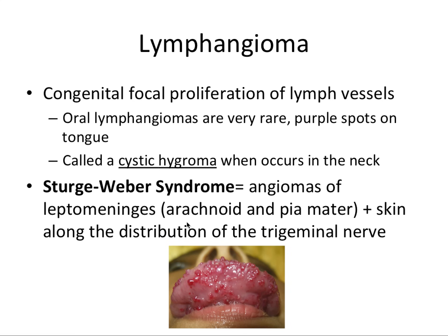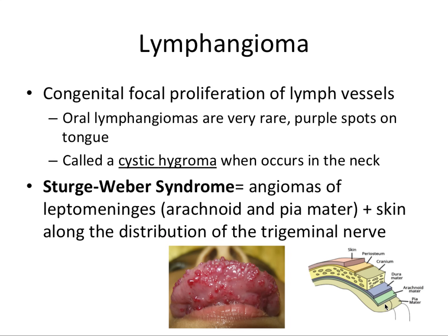Sturge-Weber syndrome involves angiomas of the leptomeninges — the arachnoid and pia mater, the two most internal meninges — and also angiomas of the skin along the distribution of the trigeminal nerve: V1, V2, V3. The angiomas of this syndrome can also be referred to as encephalotrigeminal angiomatosis — 'encephalo' referring to brain, 'trigeminal' referring to the nerve, and 'angiomatosis' referring to the presence of angiomas in relation to those structures. So Sturge-Weber syndrome is all about angiomas.